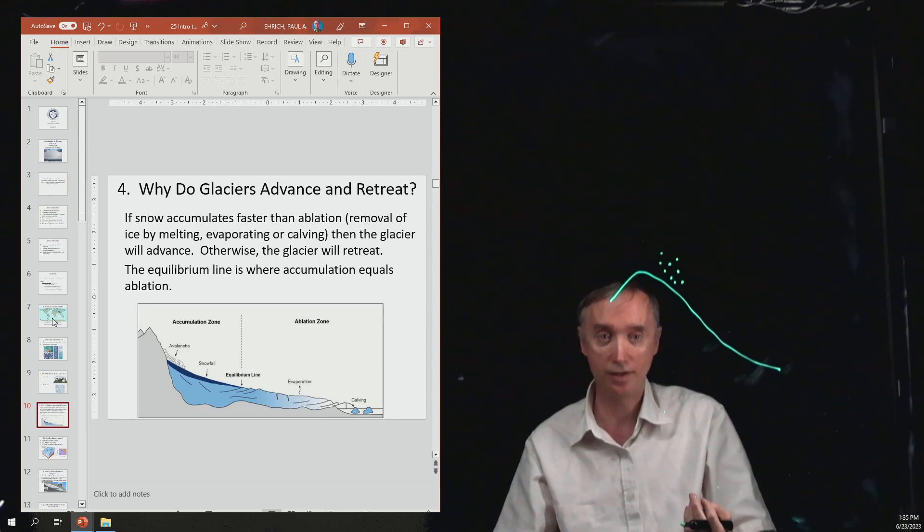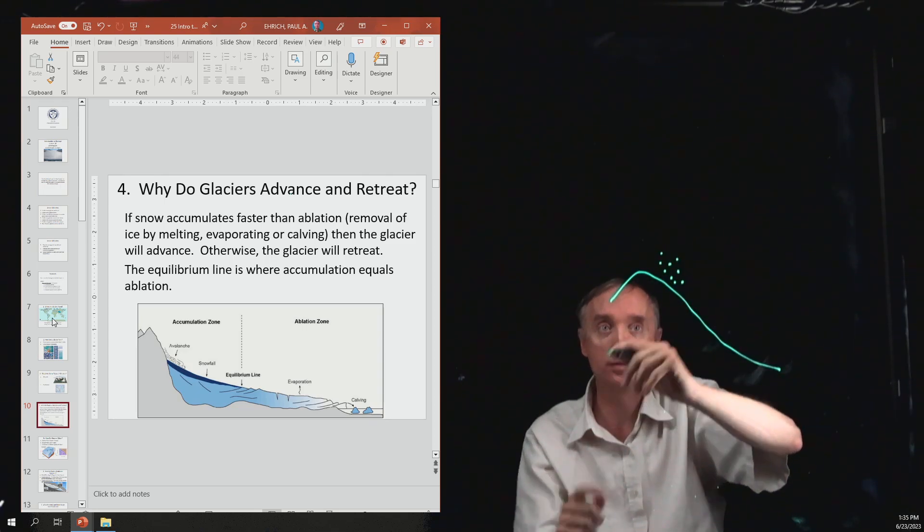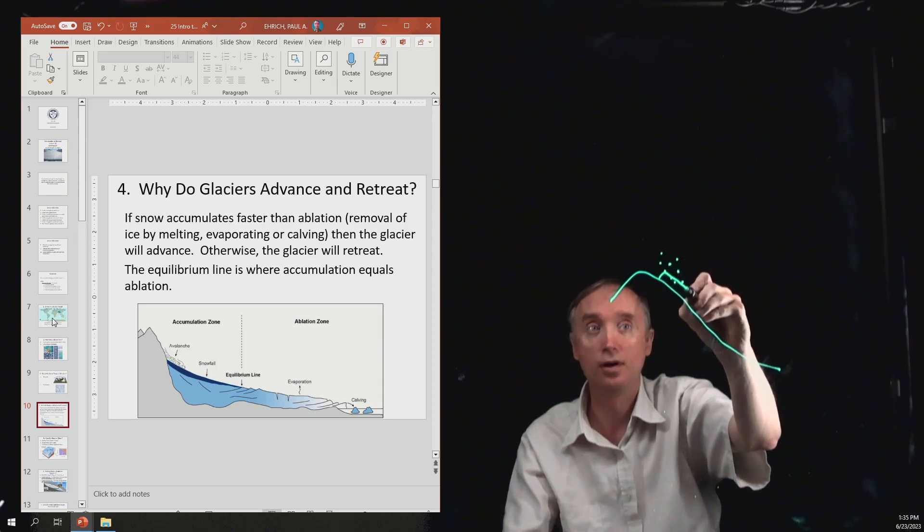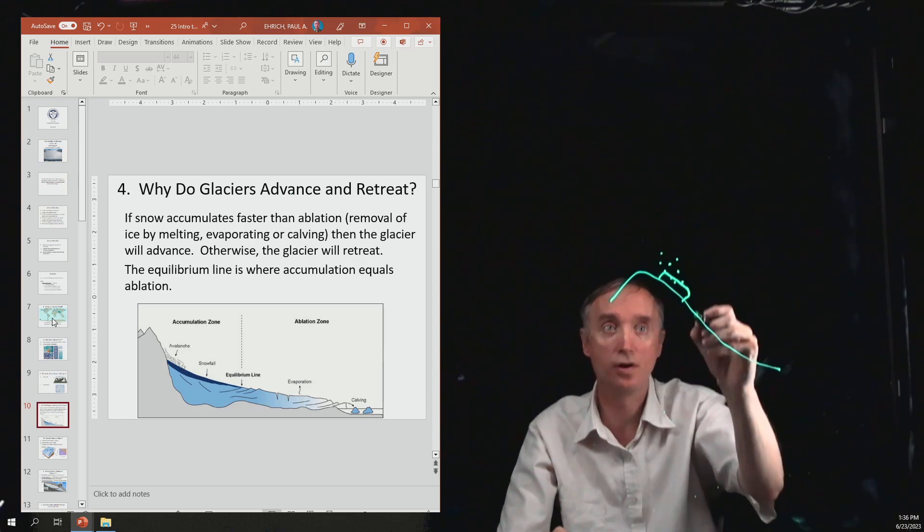It is accumulating snow up here. The more snow you have, the more it's going to be compacted and you start to form a glacier up here. Then because of gravity it's going to start to be pulled down the slope.